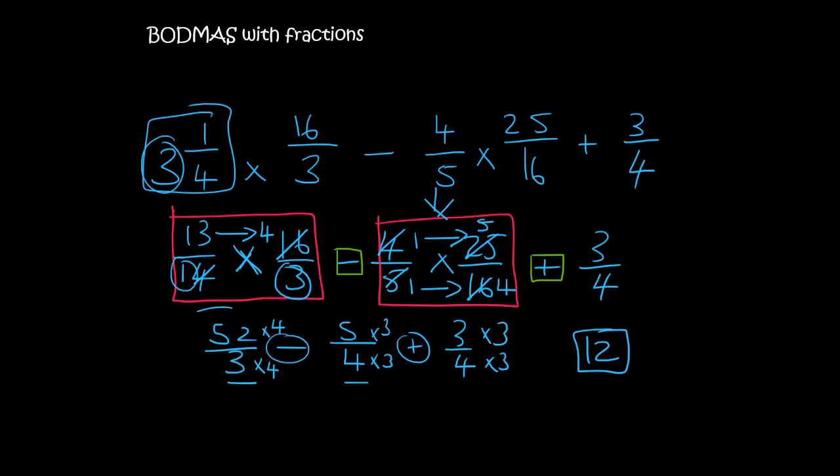So you could use your calculator here definitely. That would give you 208 over 12 minus 15 over 12 plus 9 over 12. 208 minus 15, so you can use your calculator for that.